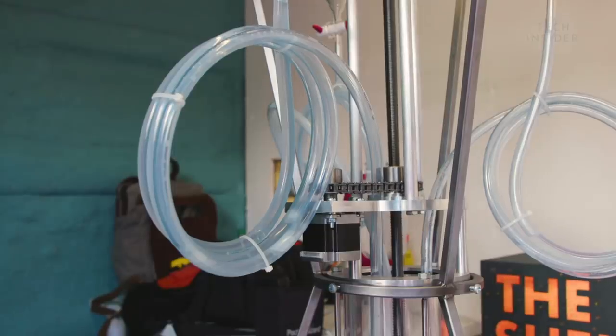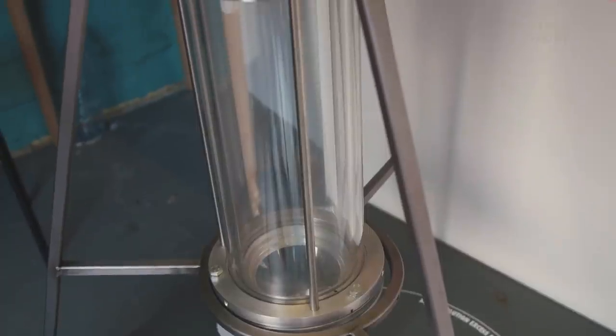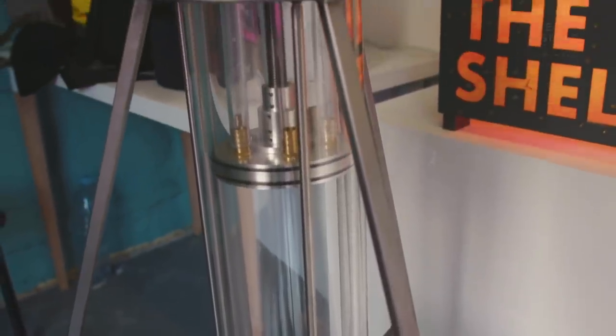The first machine is an extraction unit. We basically put in ground-up lobster shells. It runs through a set of processes, and out comes the powder, which is the chitosan.